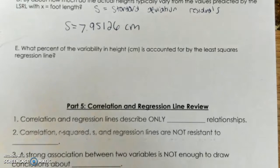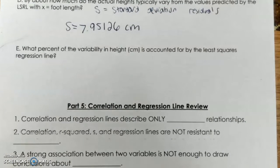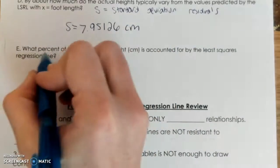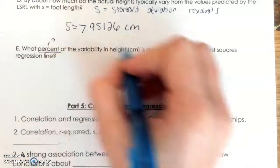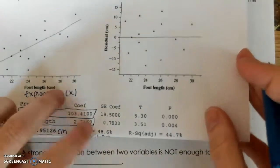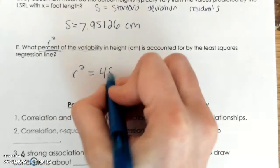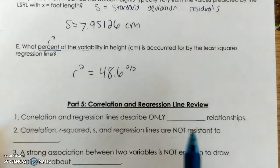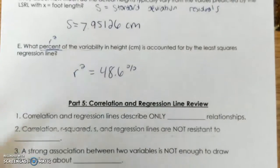The next part asks: what percent of variability in height is accounted for by our model — our least squares regression line? This is the sentence stem for R squared. When I see 'what percent of the variability,' I know that means R squared. Going back to the output, my R squared is 48.6%. So 48.6% of the variability in height is accounted for by our model, where x is equal to foot length in centimeters.